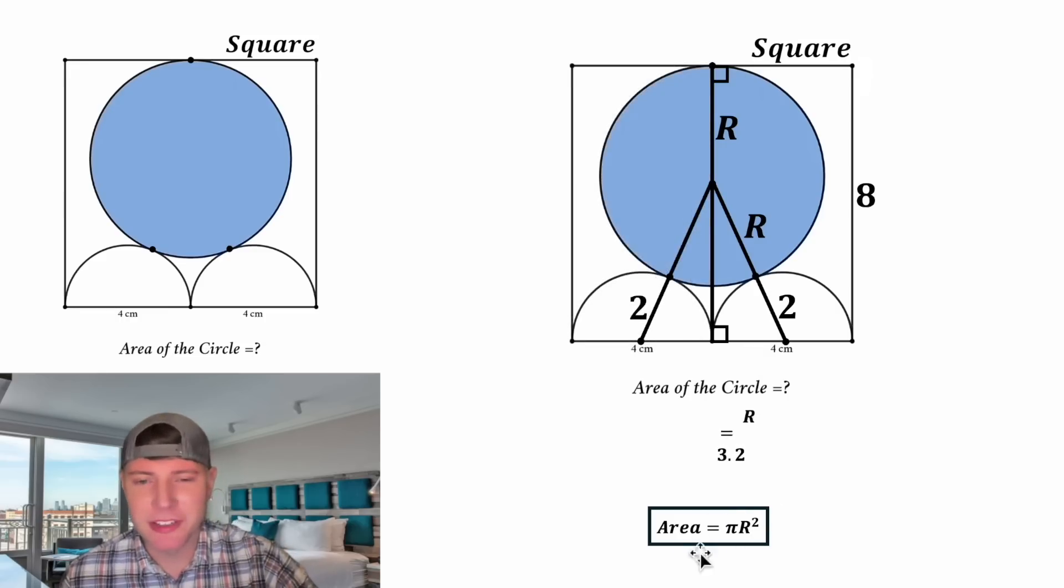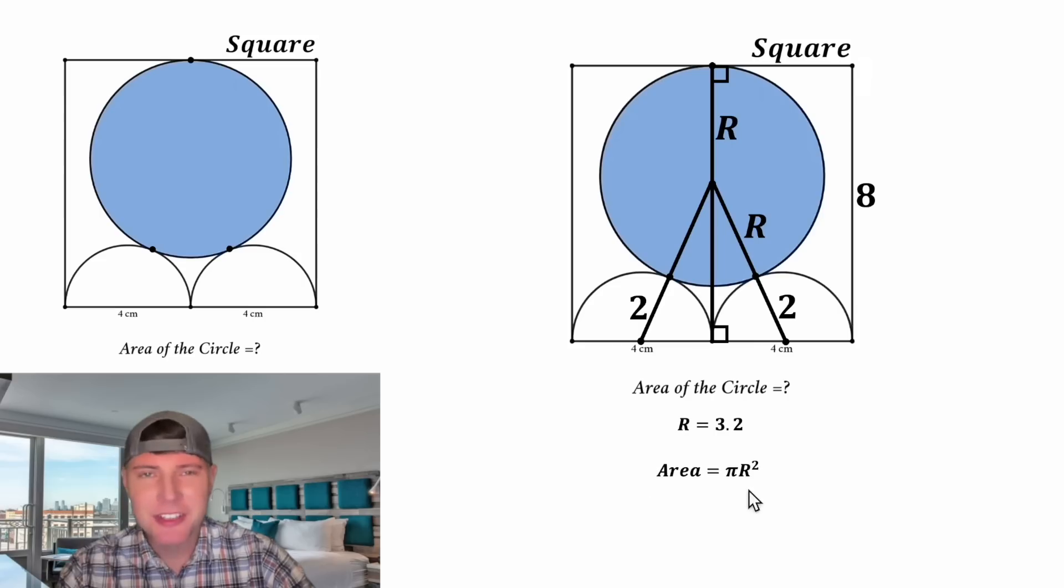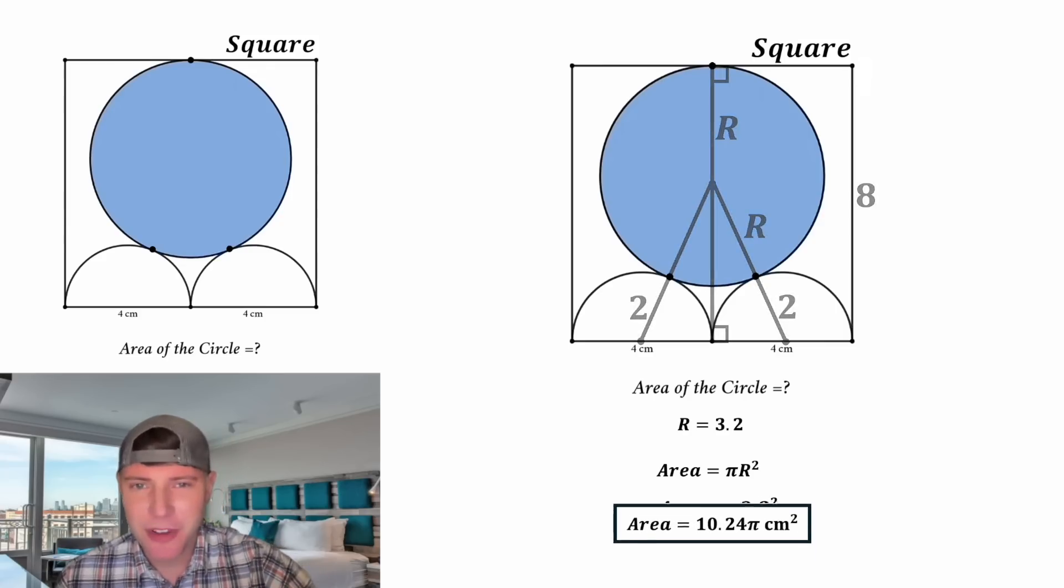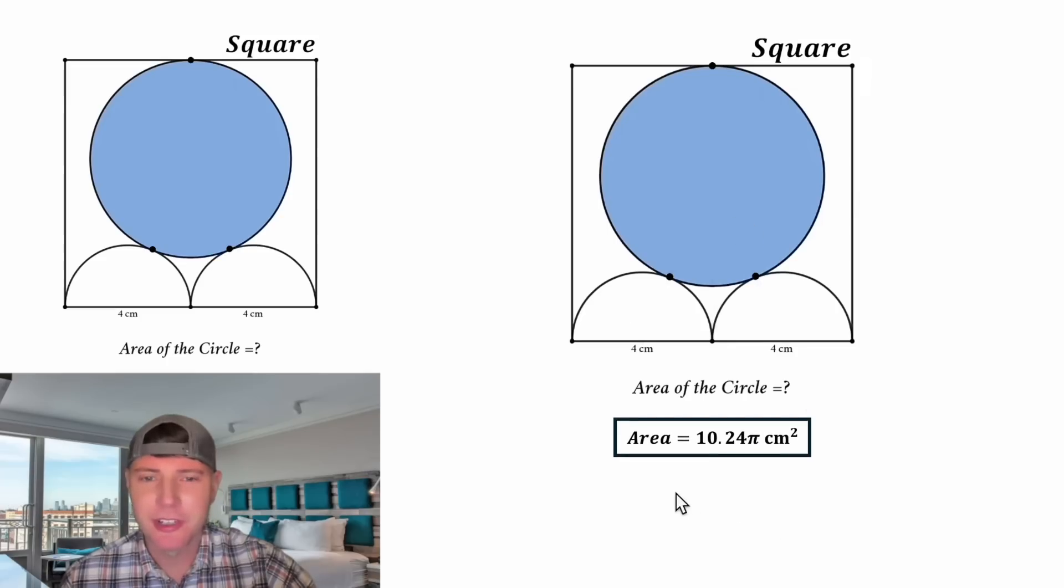And now that we know big R, we can solve for the area. In the place of this big R, let's plug in 3.2. And π times 3.2 squared is equal to 10.24π. Let's give it a label of square centimeters and let's put a box around it. So now we found the area of this blue circle. How exciting.